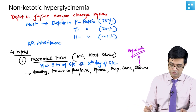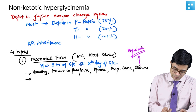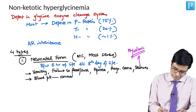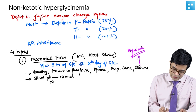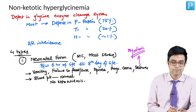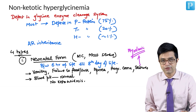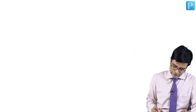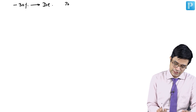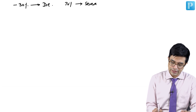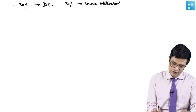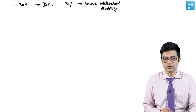Myoclonic jerks are common in these children. The blood pH is found to be normal and there is no ketoacidosis. The neonatal form is a very severe form — almost 30 percent of these patients tend to die. The remaining 70 percent who survive are left with severe intellectual disability and various forms of CNS disorders, making the quality of life very poor.